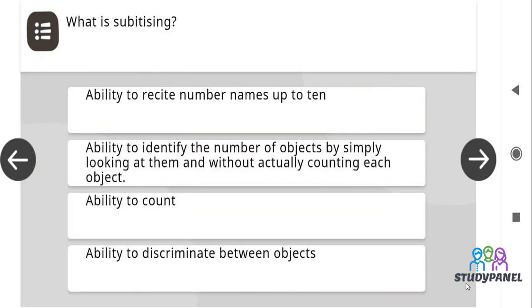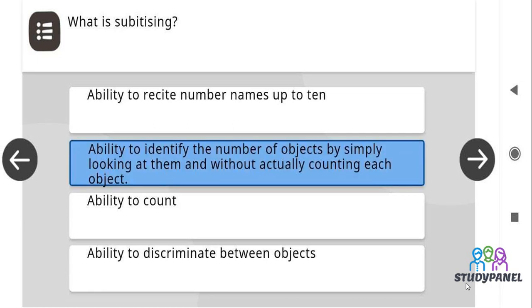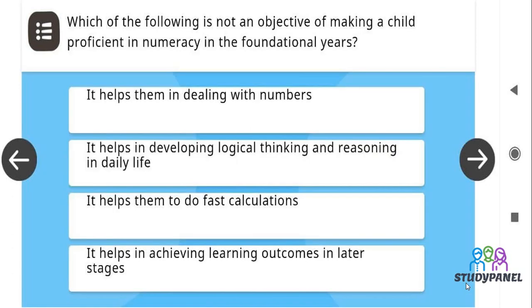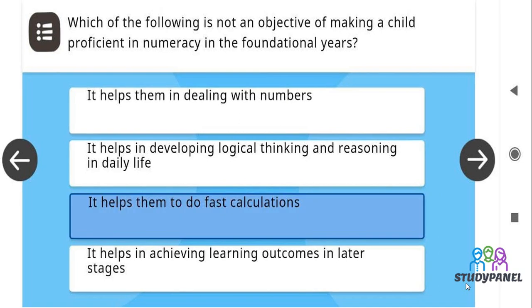What is subitizing? The correct answer is ability to identify the number of objects by simply looking at them and without actually counting each object. Which of the following is not an objective of making a child proficient in numeracy in the foundational years? The correct answer is it helps them to do fast calculations.